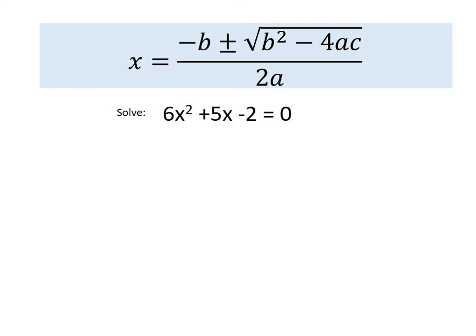So this question, solve 6x squared plus 5x minus 2 equals 0 using this quadratic formula. The first thing we need to know is where these values are going to come from, a, b and c. Well they come from the question.